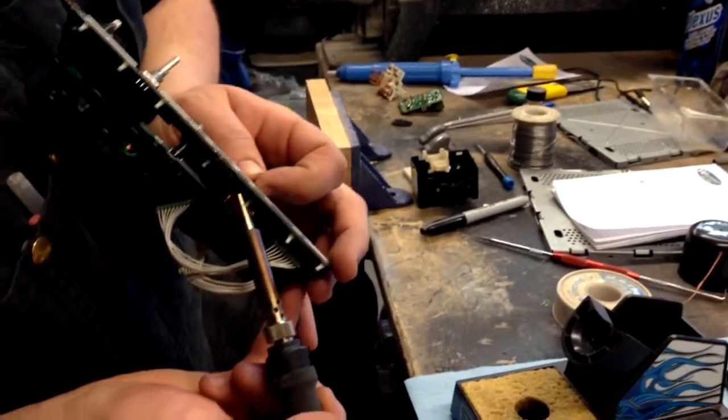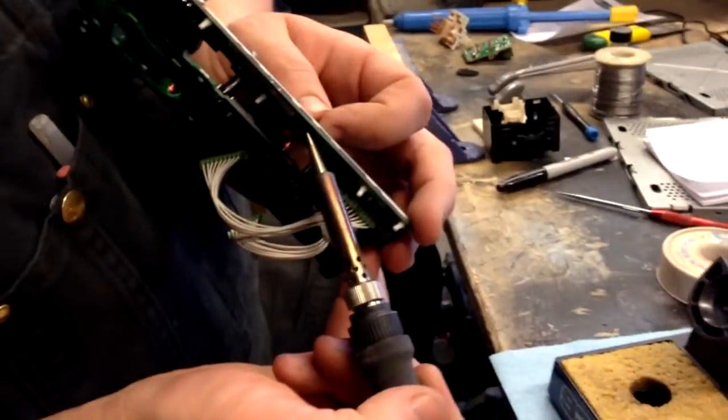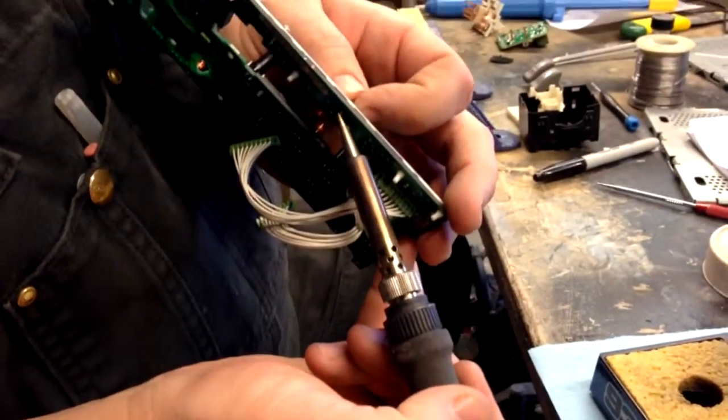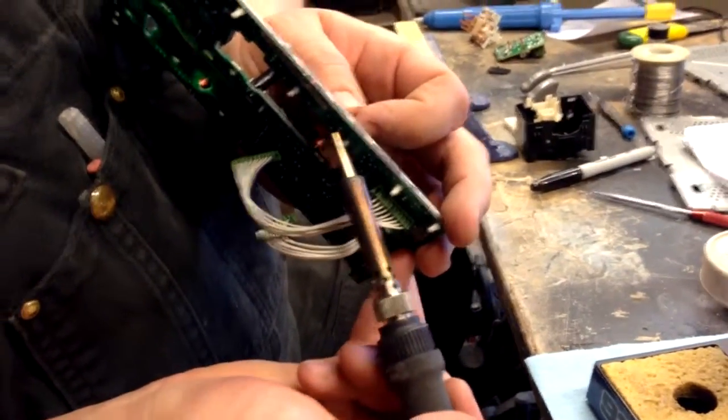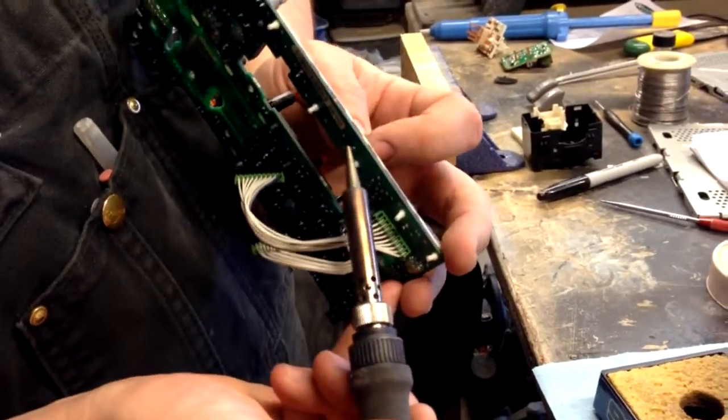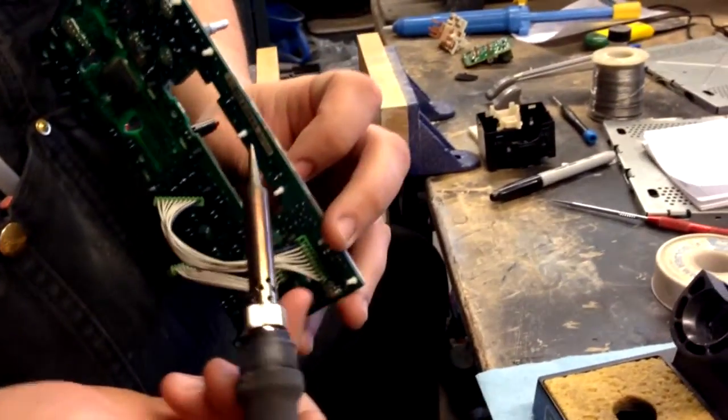What you do is you heat up one side and you put a little bit of pressure on the bulb, and you'll feel it give. Don't pull too hard because you'll pull the traces off the circuit board. You'll feel it give. When it gives, easy, go for it.